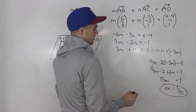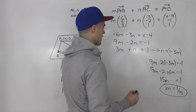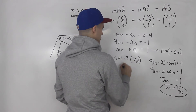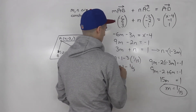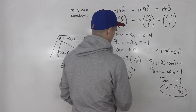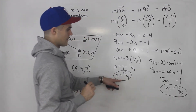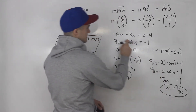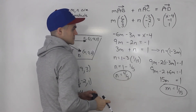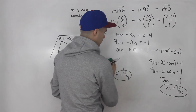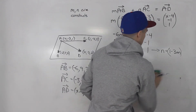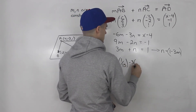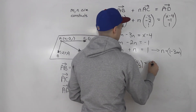Now plug M = 1/15 into N = 1 − 3M: N = 1 − 3·(1/15) = 1 − 3/15 = 1 − 1/5 = 4/5. So M = 1/15 and N = 4/5. Now we take those two constants and plug them into the first equation to solve for x.